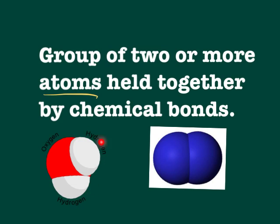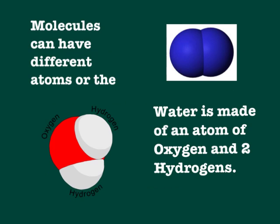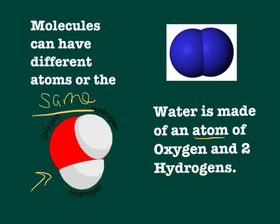So if you can see, this one has three different atoms and this one has two atoms, but they're both held together by those bonds. Using water as an example — which this right here is water — water is made up of an atom of oxygen and two hydrogen atoms.